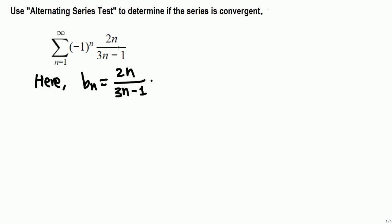To show this series converges, we need to show two things: b_n's are decreasing and they decrease to 0. That means when n goes to infinity, b_n should go to 0.